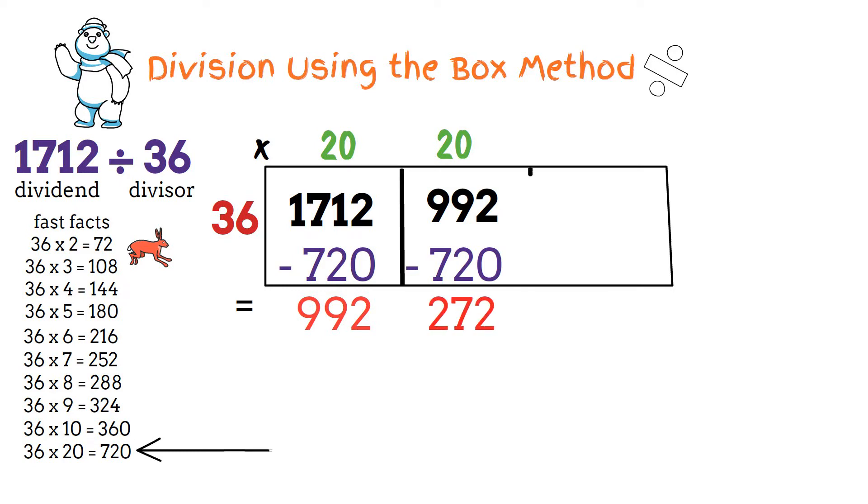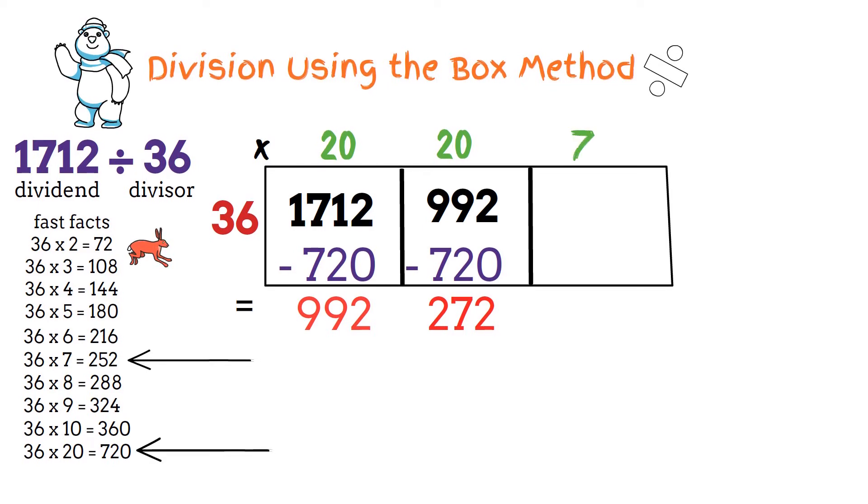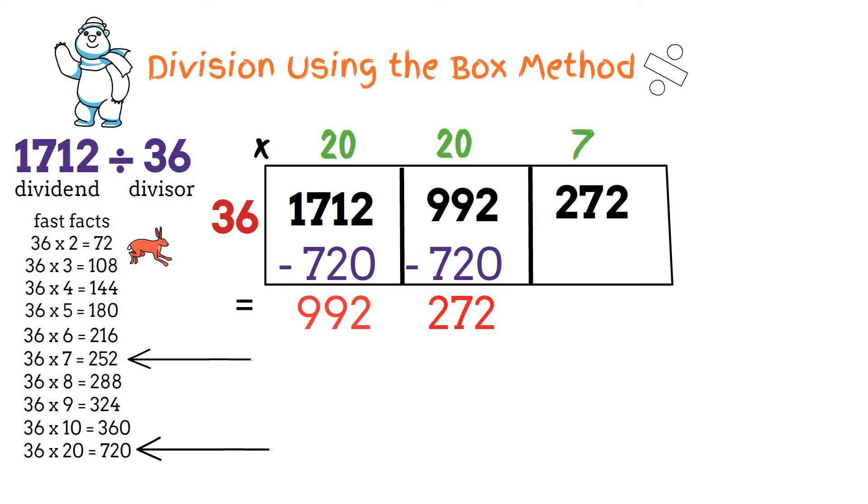Basically 36 goes into 992 20 times. Last let's use our fast facts again. This time let's use 36 times 7 which is 252. Subtract 272 minus 252. We get 20.